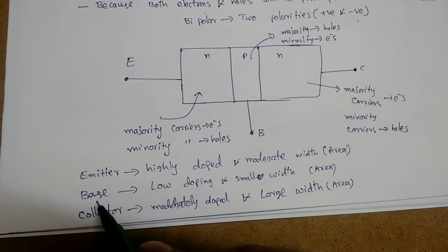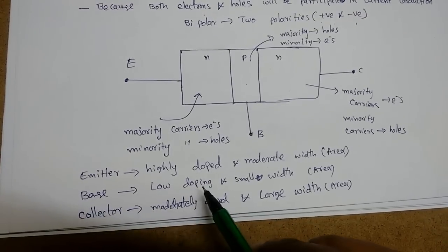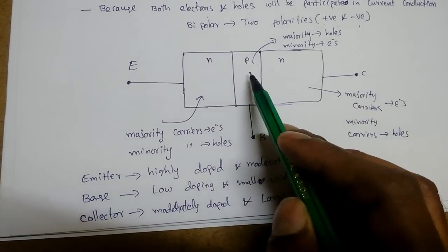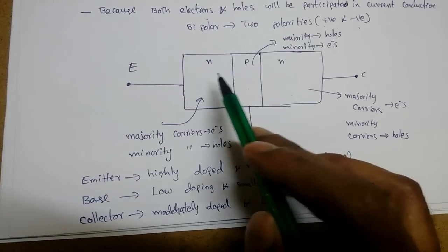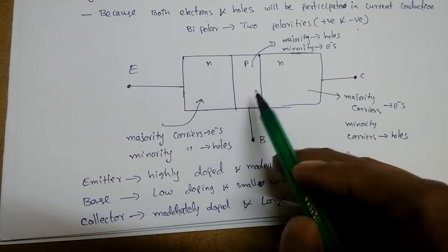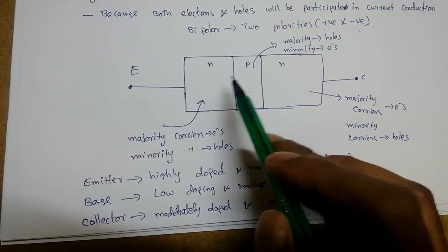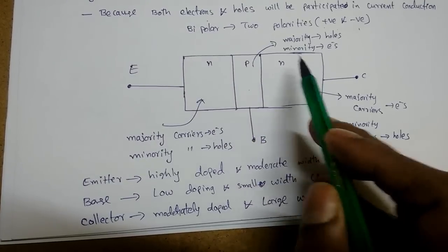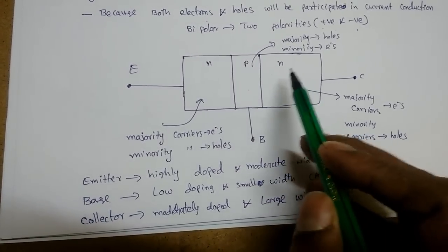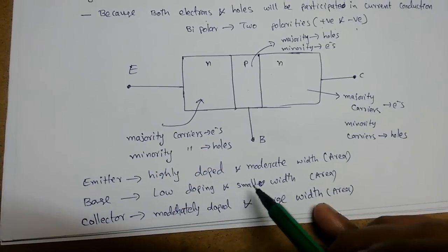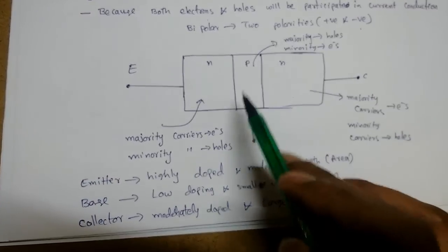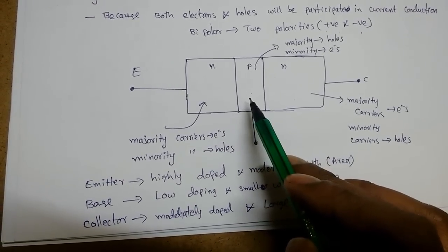The base should have very low doping. When electrons enter the P-type base, they try to recombine with holes. If the number of holes is very small, less recombination happens and we get more current; if more recombination happens we get less current. That is why the base should be lightly doped. Area-wise the base should also be very small compared to the other two regions, again to minimize recombination.